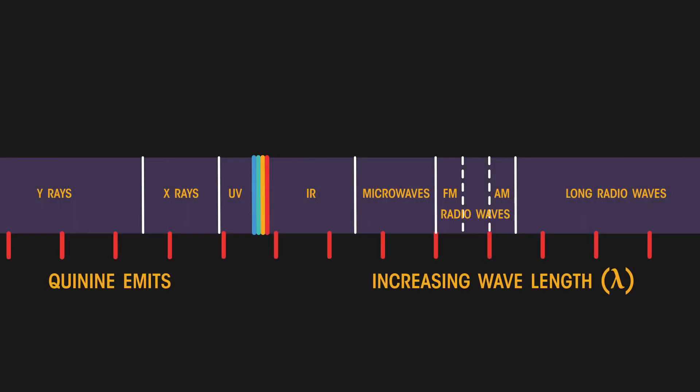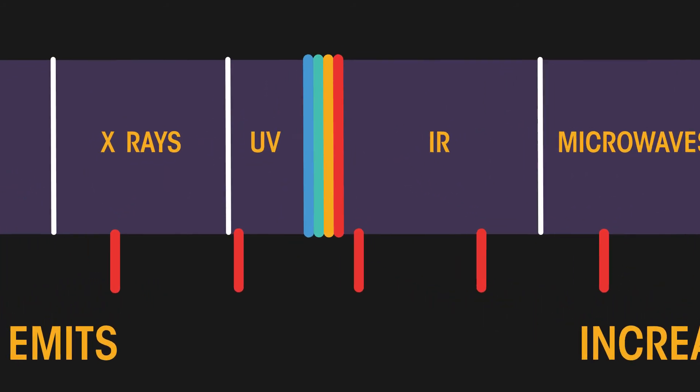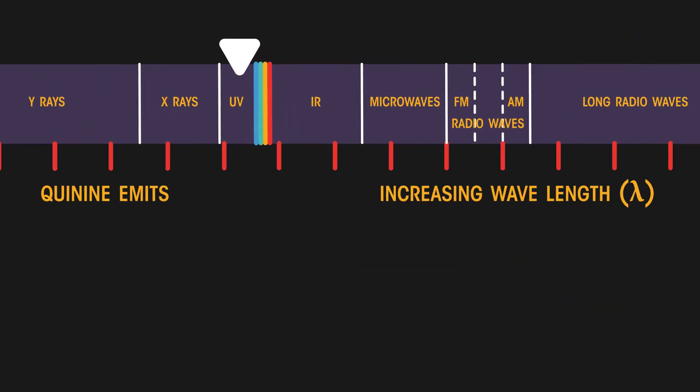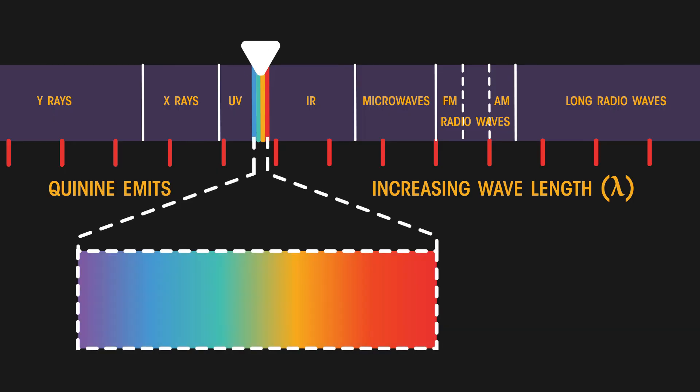If the absorbed electromagnetic radiation is in the invisible ultraviolet part of the spectrum or short wavelength, then the light emitted will be of a longer wavelength and be in the visible part of the spectrum.